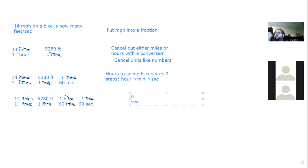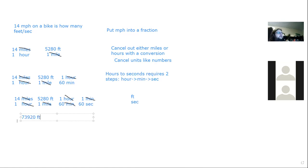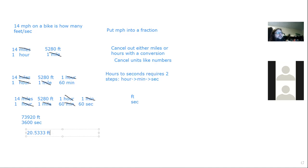After setting it up, you can cancel what you can or just use a calculator. 14 × 5,280 = 73,920 feet; 60 × 60 = 3,600 seconds. Dividing gives 20.53 repeating feet per second. The most important thing is to set it out clearly so you can see that miles, hours, and minutes are all cancelling out.